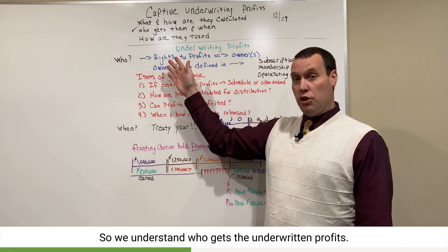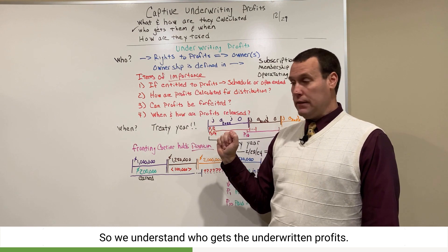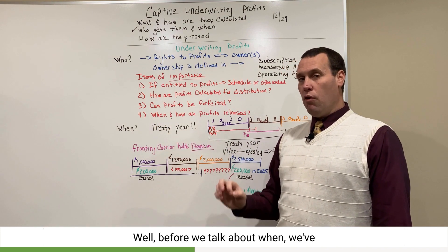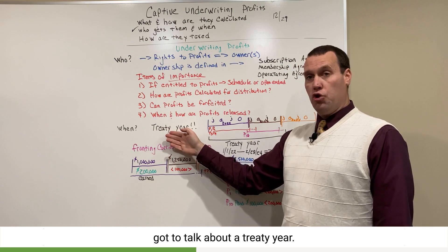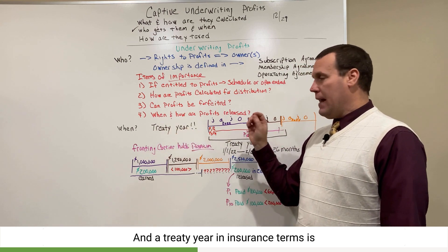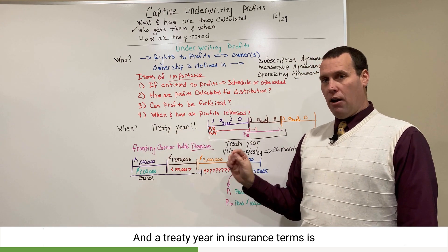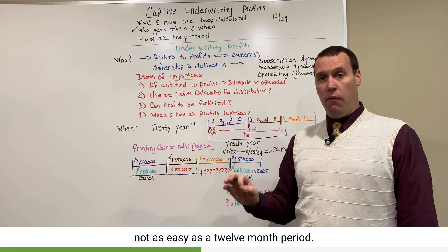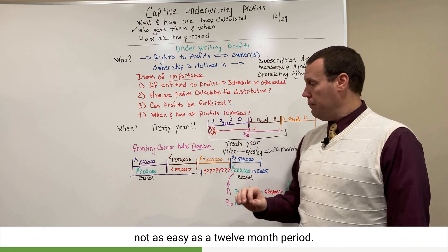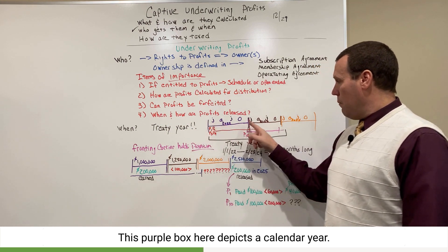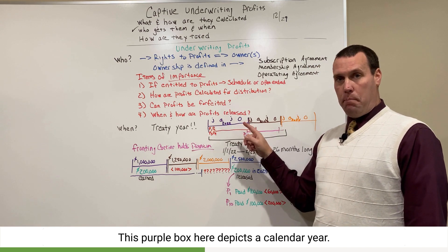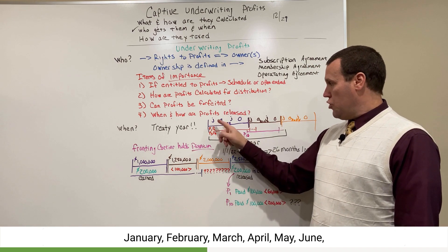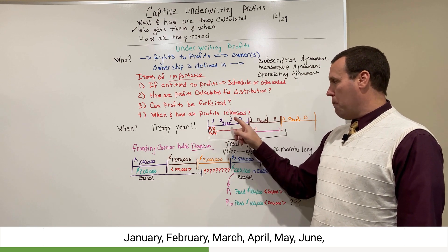So we understand who gets the underwriting profits. Now — when? Before we talk about when, we've got to talk about a treaty year. A treaty year in insurance terms is not as easy as a 12-month period. This purple box here depicts a calendar year: January through December.